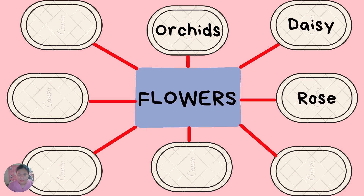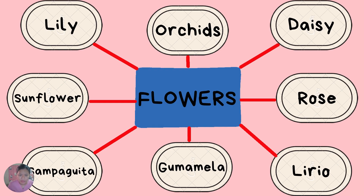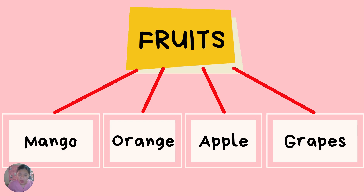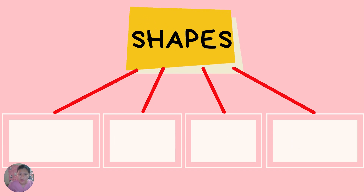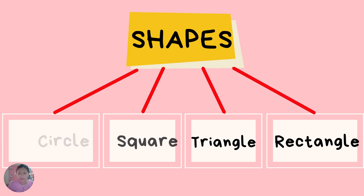Orchids, daisy, rose, lily, gumamela, sampaguita, sunflower, and lily are the hyponyms of the general word flowers. Another example: for the general word fruits, what are the hyponyms? We have mango, orange, apple, and green. They are the hyponyms of the general word fruits. Another example — general word shapes. What are the hyponyms? We have circle, square, triangle, and rectangle. They are the hyponyms of the general word shapes.